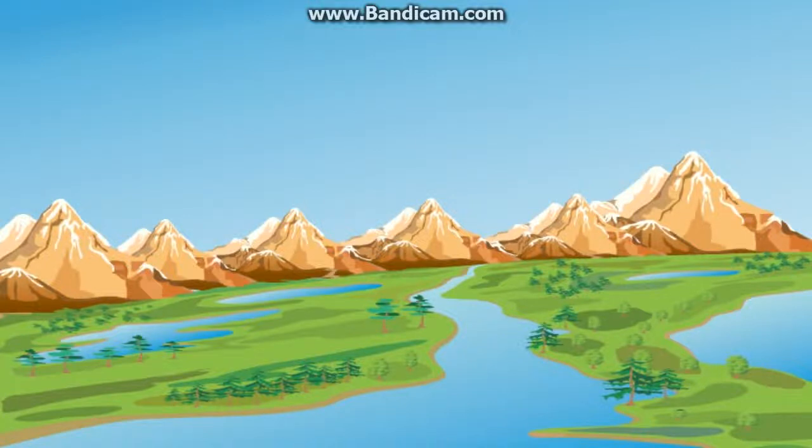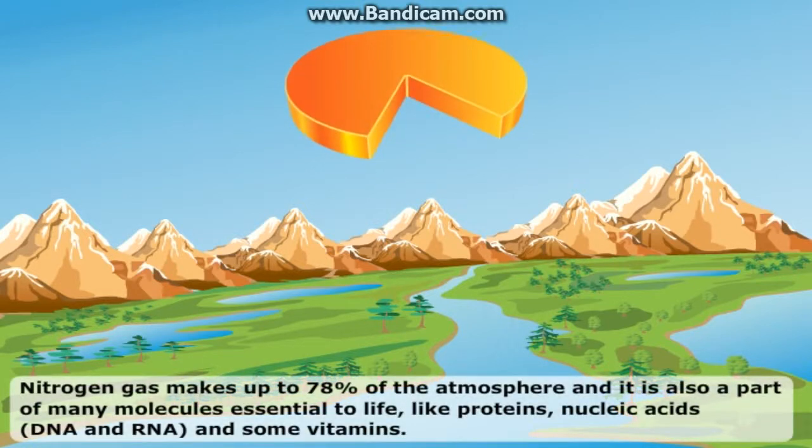The Nitrogen Cycle. Nitrogen is an essential nutrient for all life forms. Nitrogen gas makes up 78% of the atmosphere, and it is also a part of many molecules essential to life, like proteins, nucleic acids, and some vitamins. Nitrogen is also found in other biological compounds, such as alkaloids and urea.